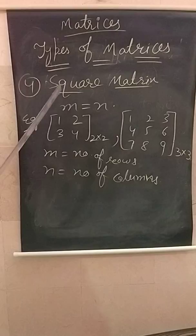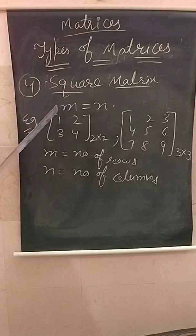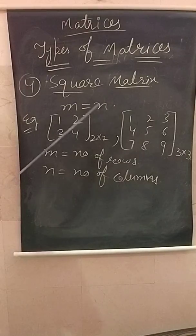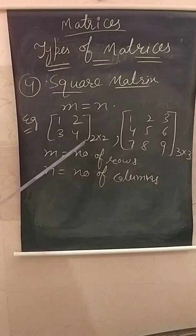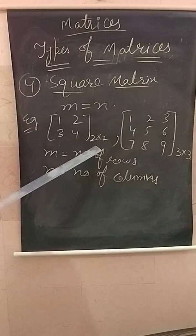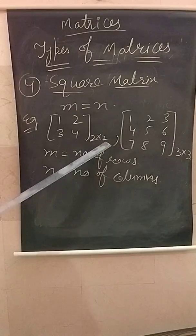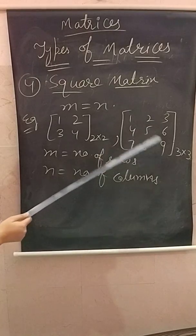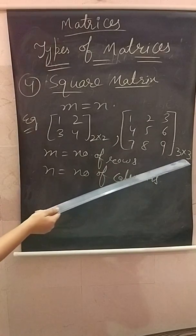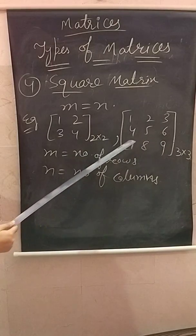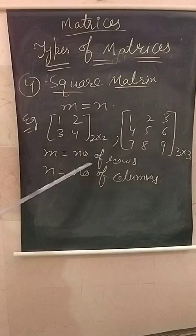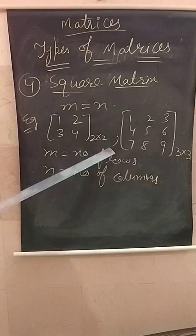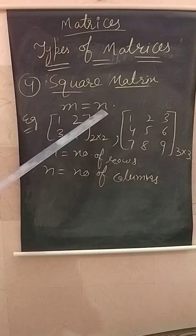Type four is the square matrix. In a square matrix, the number of rows equals the number of columns, meaning m equals n. For example, a two by two matrix has m equal to two and n equal to two, so m equals n — this is a square matrix. Similarly, a three by three matrix with elements one through nine, having three rows and three columns, is also a square matrix. In general, m equals n defines a square matrix.